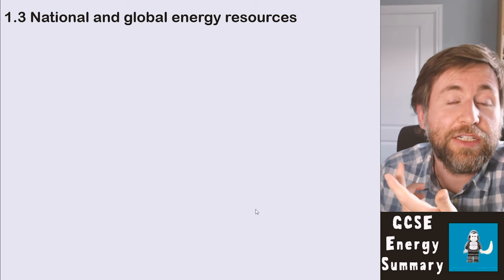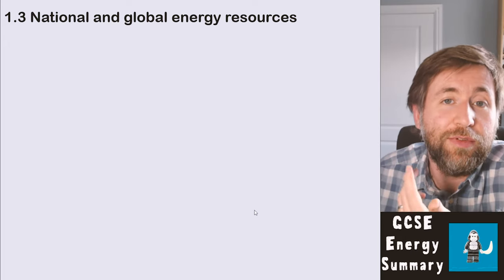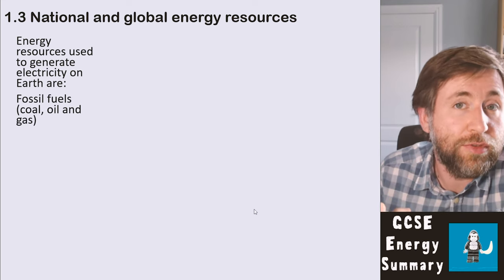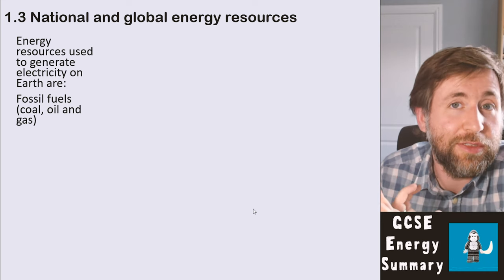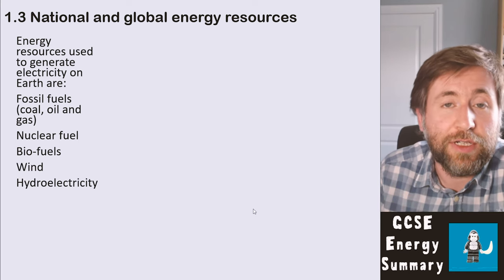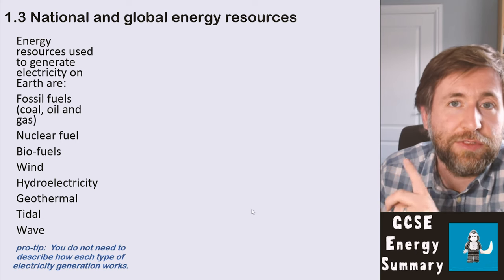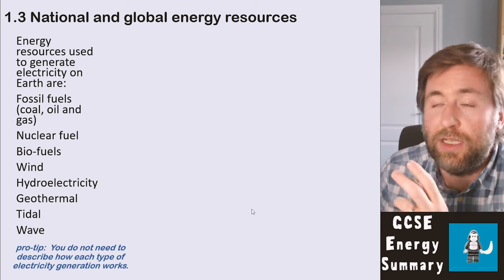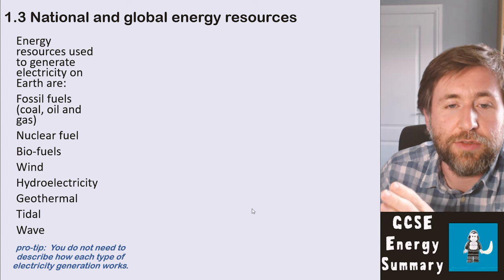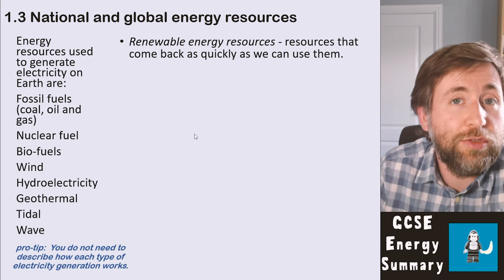Part 1.3 covers national and global energy resources and why we make the choices we do. The energy resources used to generate electricity are: fossil fuels (coal, oil, gas), nuclear fuels, biofuels, wind, hydroelectricity, geothermal, tidal, and wave. You don't need to describe exactly how each type of electricity generation works — what you need to do is compare them and give reasons why you'd use one over another.